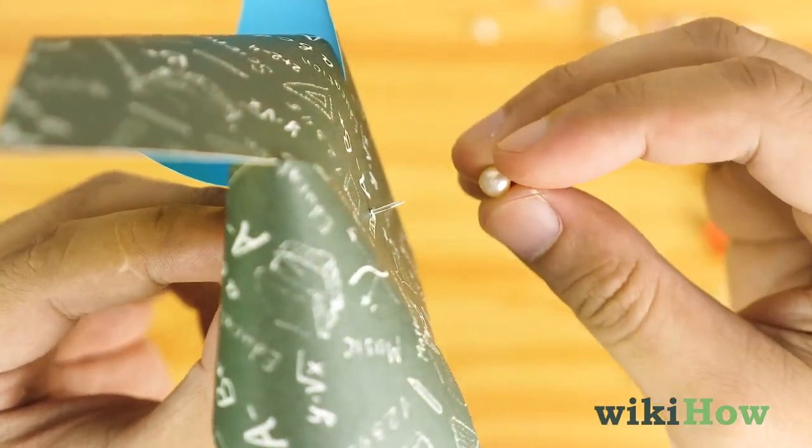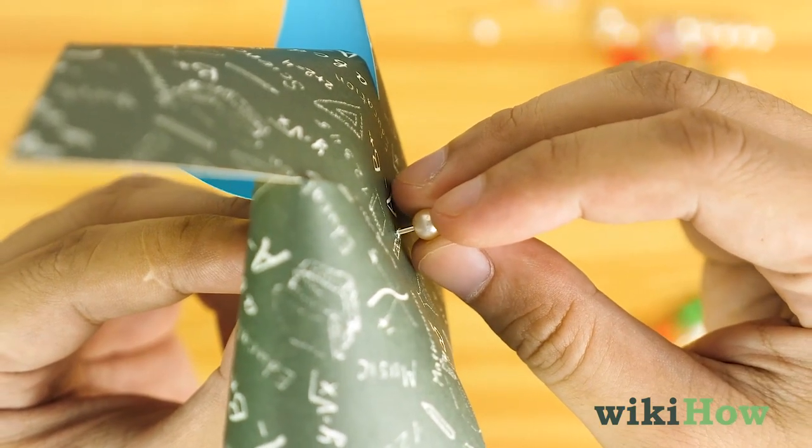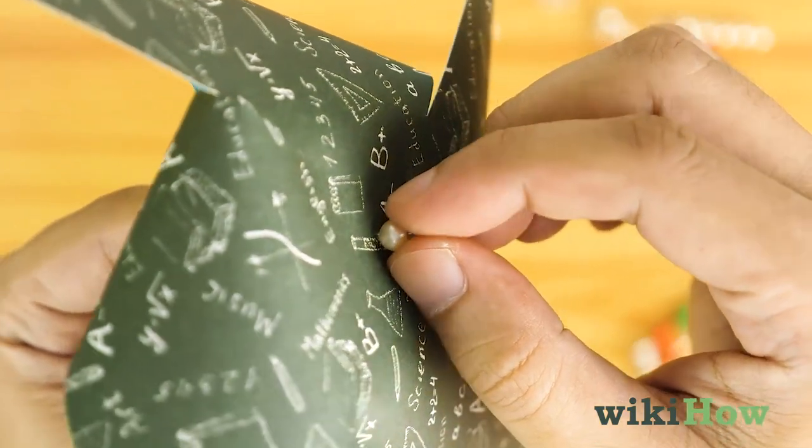Then put one small bead onto the end of the pin. This will lift the pinwheel away from the dowel and allow it to spin.